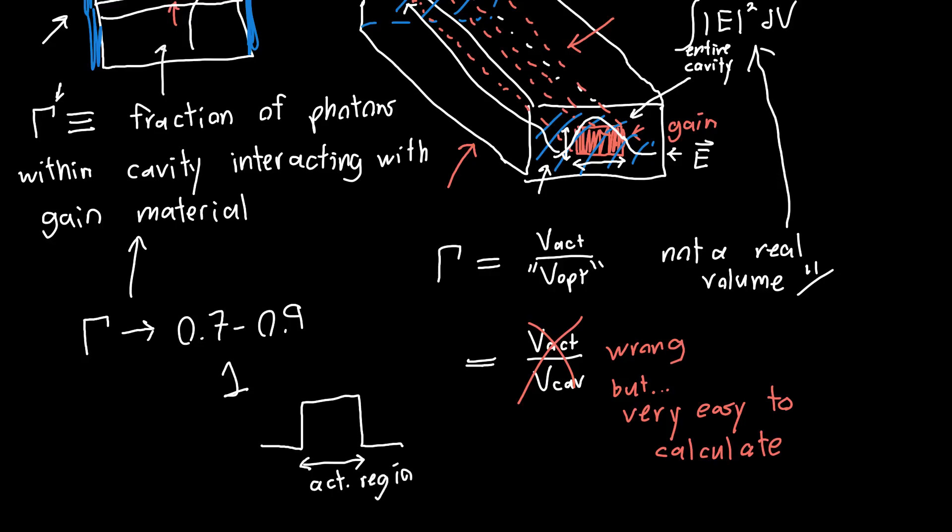Whereas if gamma is pretty small, so gamma maybe is, for example, like 0.3, then your electric field profile might instead look something like this. So you've got these long tails off to the side, outside of your active region.